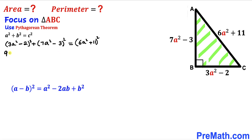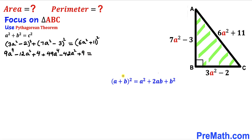Expanding the left-hand side gives us 9a⁴ − 12a² + 4 plus 49a⁴ − 42a² + 9. For the right-hand side, we recall the identity (a + b)² = a² + 2ab + b² and apply it, giving us 36a⁴ + 132a² + 121.